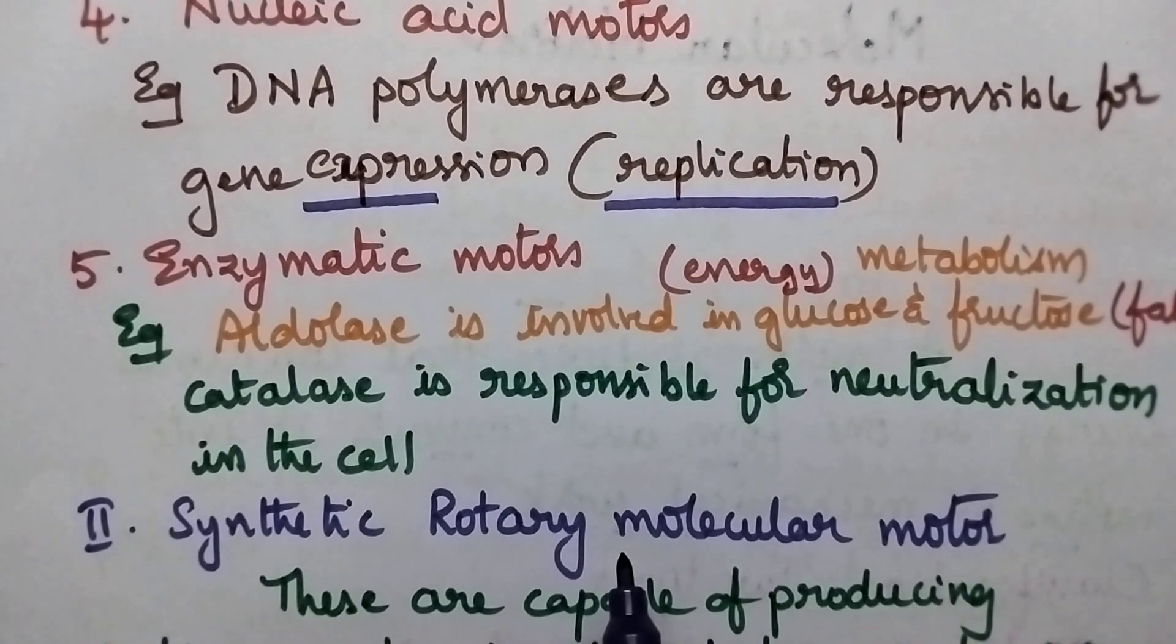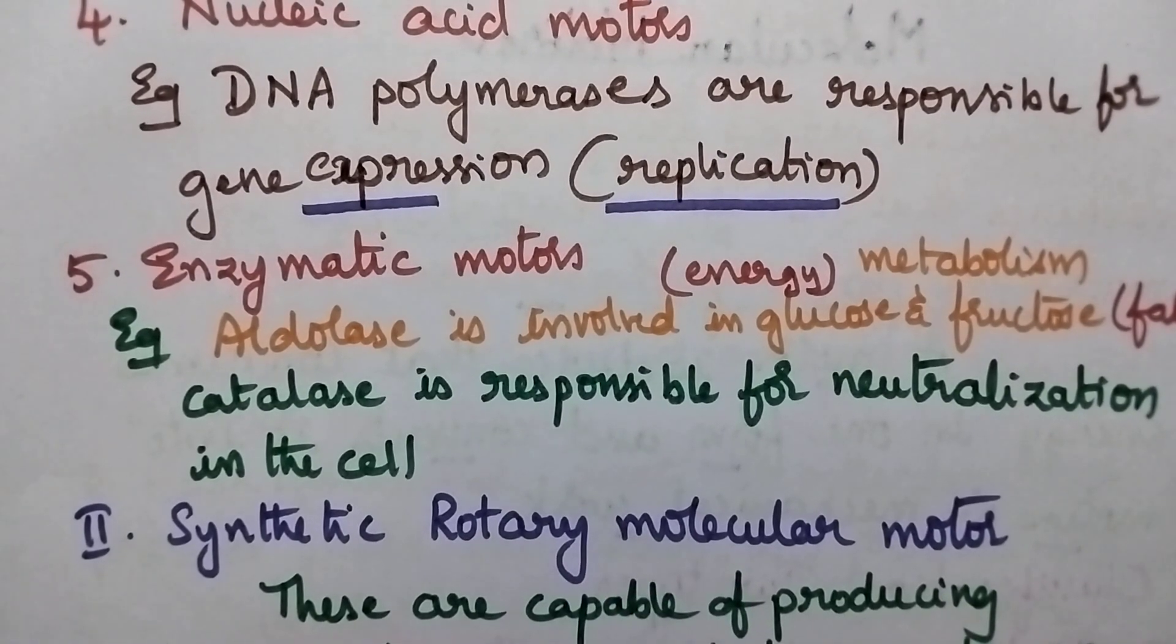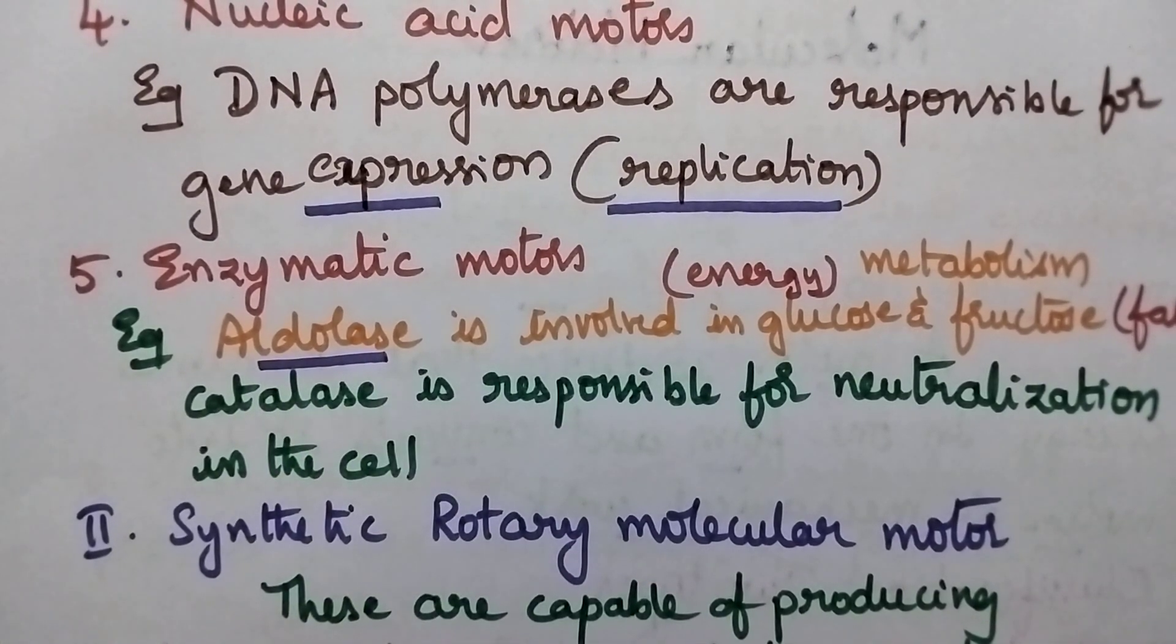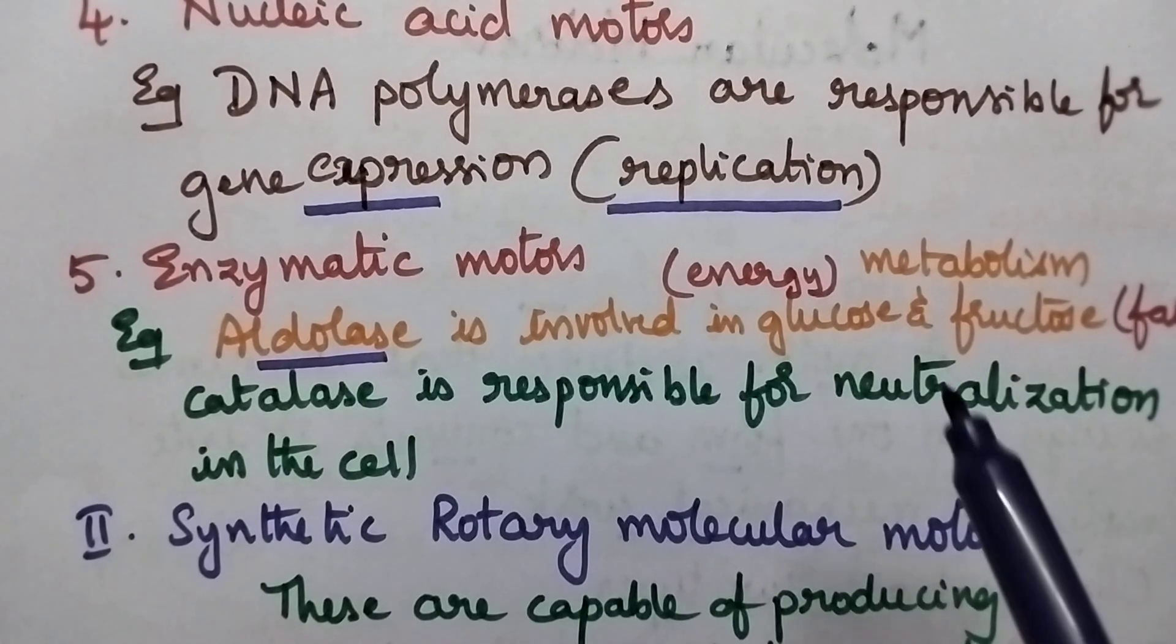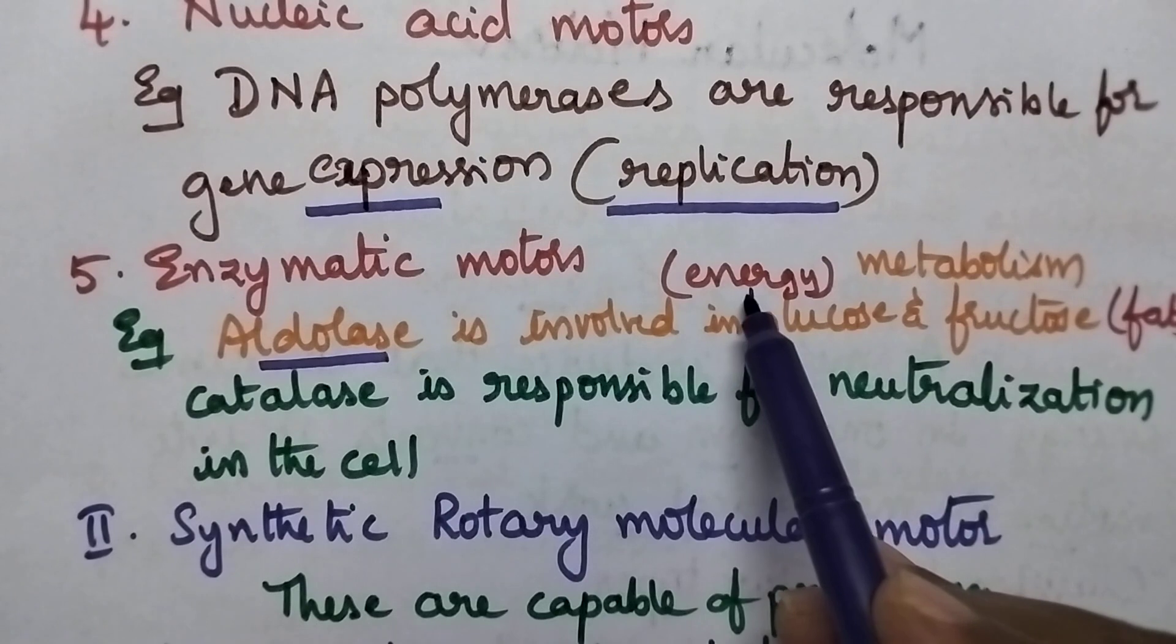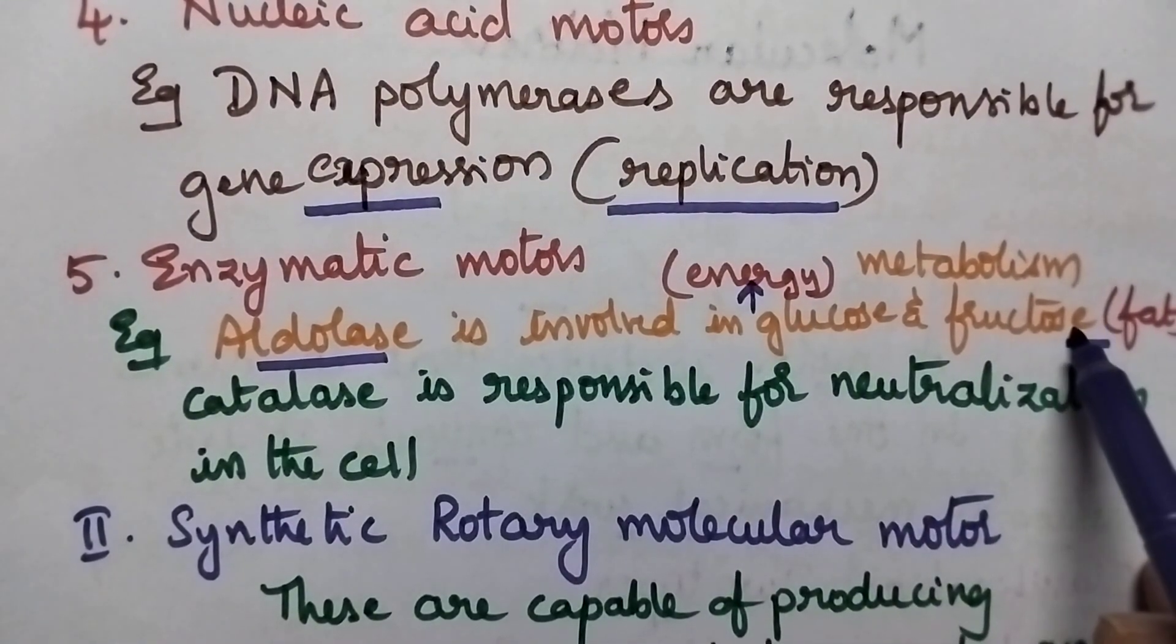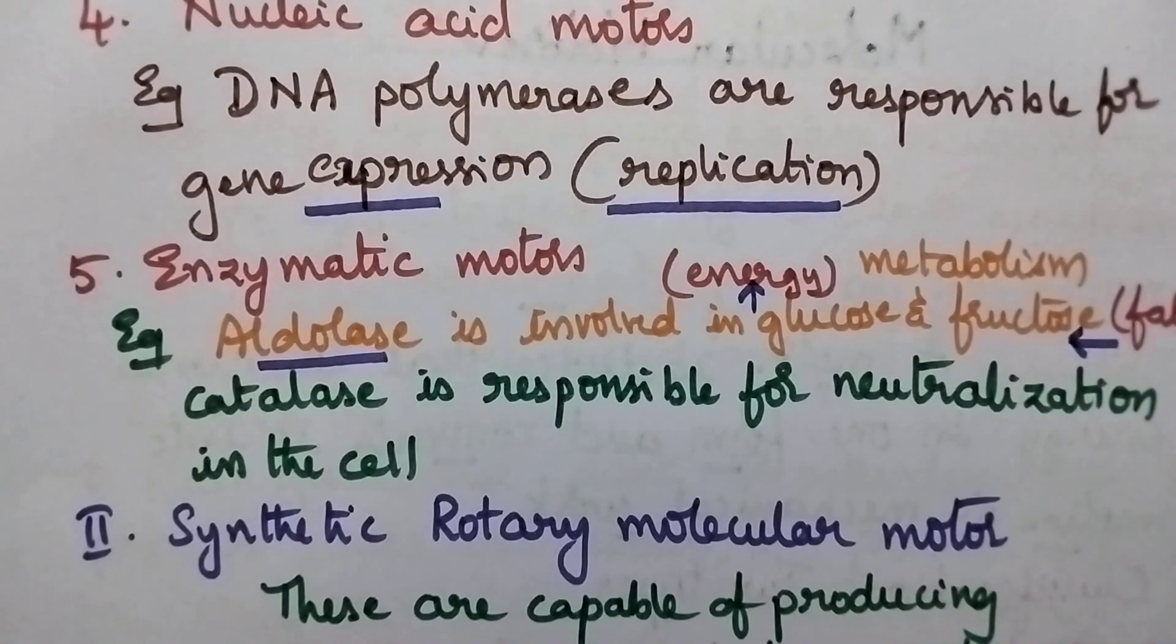Coming to enzymatic motors, they generally include aldolase. Aldolase is involved in the metabolism of glucose and fructose. Energy will be harnessed from glucose, whereas fructose will produce the required fat for the biological system.